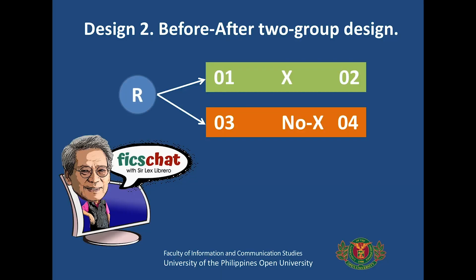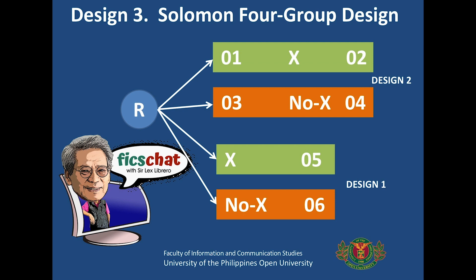Design Number Two is also called the before-after two-group design. What you do here is you conduct a pre-test first, introduce the experimental treatment, and then conduct a post-test. Simple as that. Then Design Three is what is technically called the Solomon IV Group Design. Presumably, this is the most expensive design because you need two groups here. It is a combination of Design One and Design Two.